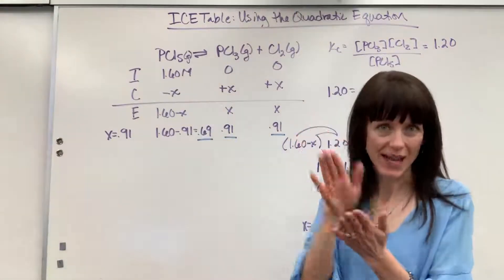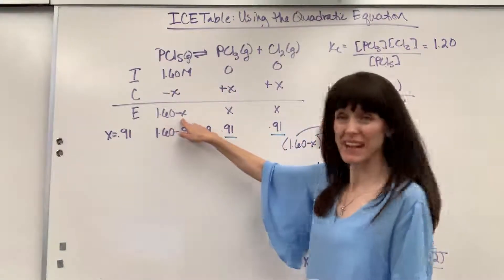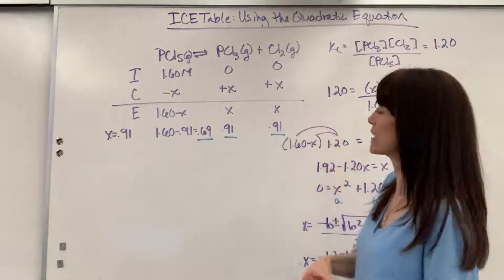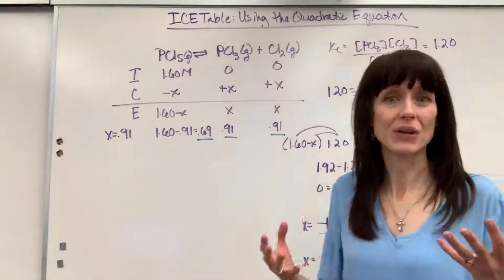E, super easy. You just add together I plus C. So we're going to get 1.6 minus X, zero plus X is X, zero plus X is X. So here we have our equilibrium concentrations. We have one unknown, it's X.